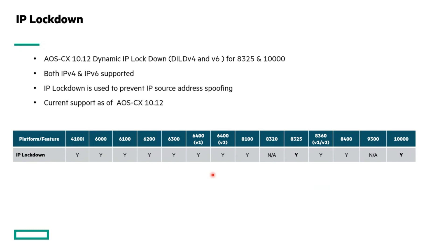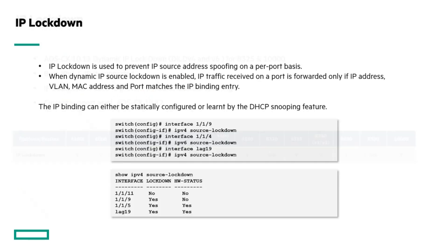Moving on to IP Lockdown — with 10.12 we've added support for the 8325 and the 10K. Both IPv4 and IPv6 are supported. The feature is there to prevent IP source address spoofing on the switch. The configuration is very straightforward: it creates a binding table that you match against, and you go into the interface and enable the IPv4 source lockdown feature.